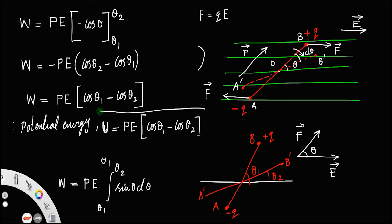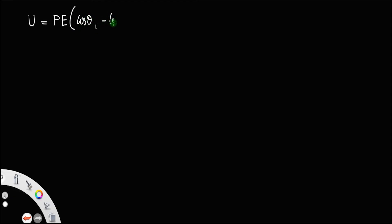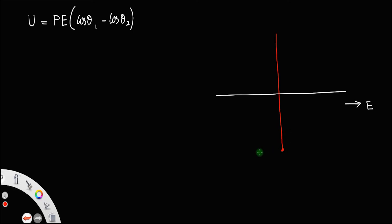So this is the expression for potential energy: U = pE(cosθ₁ − cosθ₂). Now, suppose the dipole is initially perpendicular to the electric field, which means the dipole moment is perpendicular to the electric field. So let θ₁ = 90°.